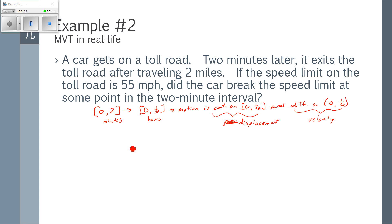So this means somewhere the instantaneous velocity must be equal to the average velocity at some point in that two minutes. So I find my average velocity, which we traveled two miles in one-thirtieth of an hour, which is 60 miles per hour.